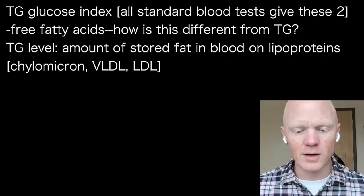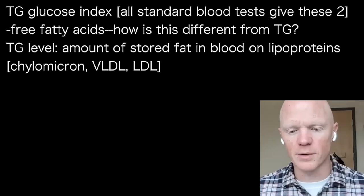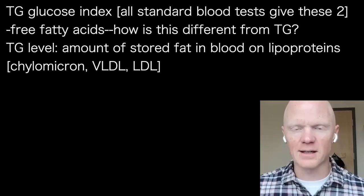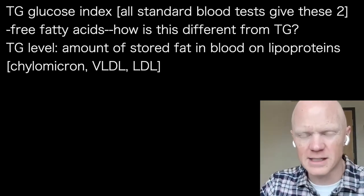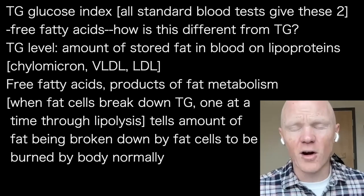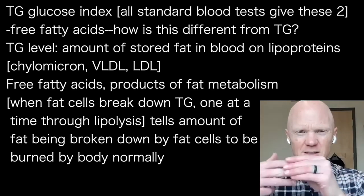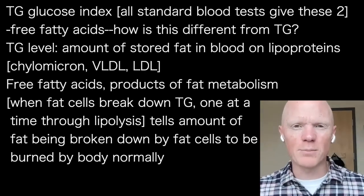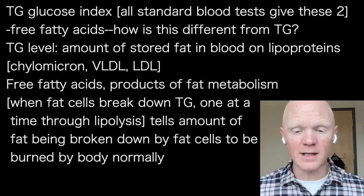The triglyceride number on a clinical test reflects the stored version of fat moving through the blood on lipoproteins like chylomicrons, VLDL, or LDL — that's how triglycerides are carried. Free fatty acids, by contrast, are products of fat metabolism. That's when fat cells break down their triglycerides, pulling the three linked fatty acids off one at a time through a process called lipolysis. Free fatty acids reflect the amount of fat being broken down from fat cells to be burned by the body.